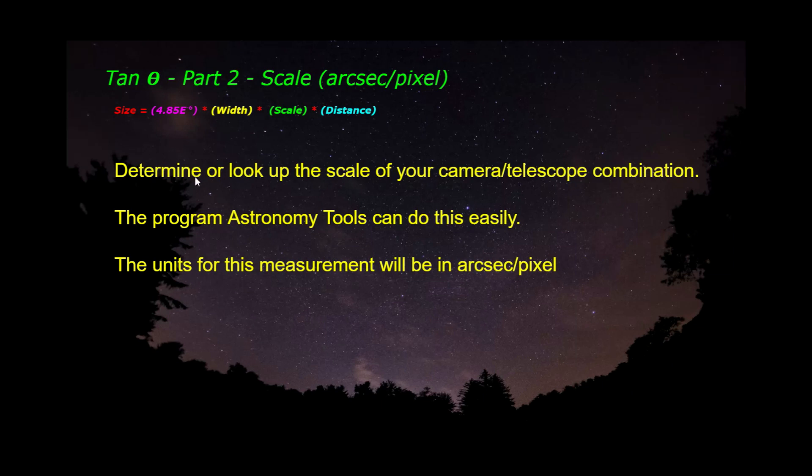The next part is this scale term. And this scale term, you just look up the dimensions or the scale of your camera and telescope combination. And if you don't know it, most of you guys know it already. But if you don't, you can look it up on Astronomy Tools. I have a video which I'll provide a link to. It's very easy to use Astronomy Tools. Or if you post your stuff to Astrobin and you plug in the information to Astrobin, it also gives you the scale there. And the units for scale are going to be in arc seconds per pixel.